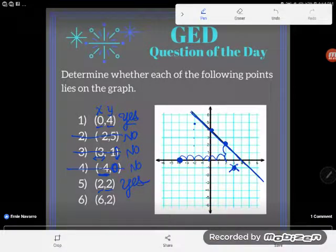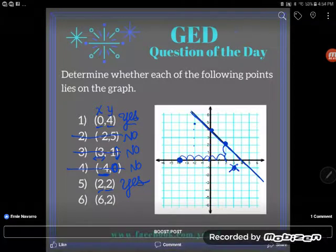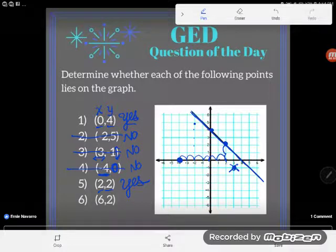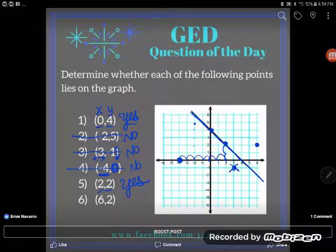And now (6,2), 6, 2. Well, we're going to go positive 6. 1, 2, 3, 4, 5, 6. Then up to 1, 2. I am not on my line there. And so that one is a no.